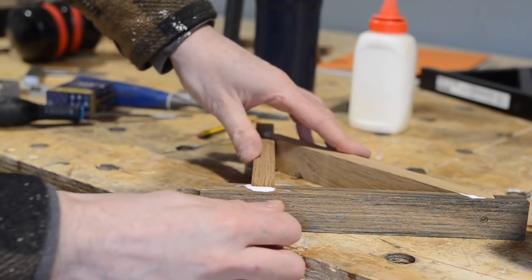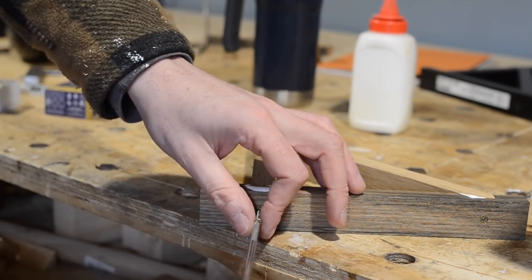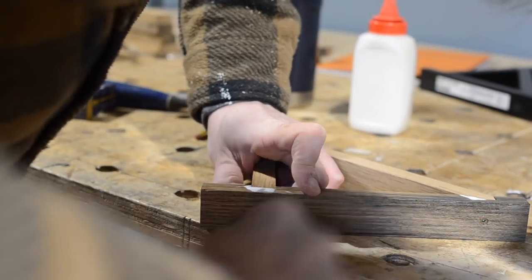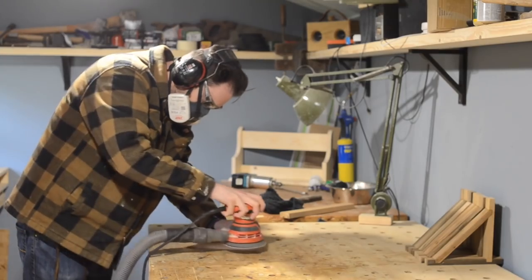Drilling some pilot holes, countersinking, and then putting in some little 3mm screws. 3mm being the thickness, not the length. I think they're 30mm long.